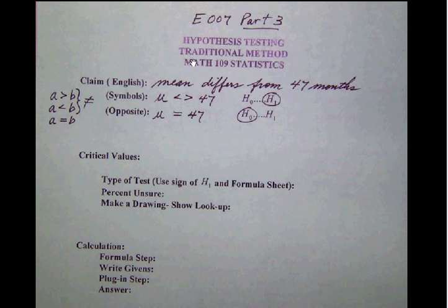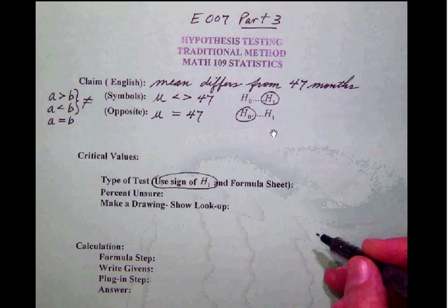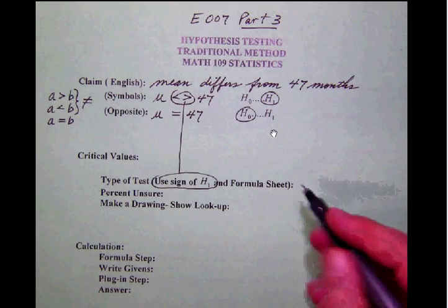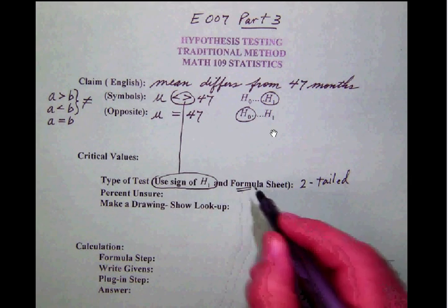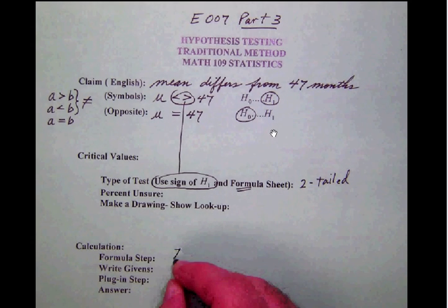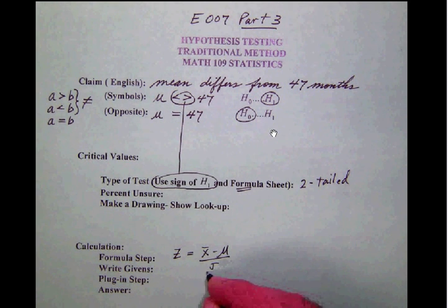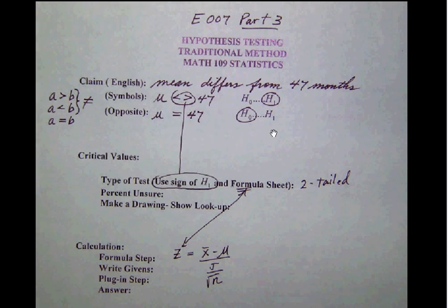Now, since this is a traditional test, since they're asking us for critical values, let's go ahead and determine those critical values first of all. Notice here then it's asking us for the type of test. And as before, the way that we determine this type of test is that we use the sign of H1. So in this case, the sign of H1, notice here is the less than, greater than sign, or the not equal to. And that tells us that the test is two tailed. So we know we're dealing with a two tailed test. Now, furthermore, from our formula sheet, just as we had before, we are dealing with a Z test because this is a hypothesis test about a mean with sigma known. So we're going to be using the same formula that we did in the first couple parts. Notice here then that our formula is going to tell us that we're dealing with a two tailed Z test.